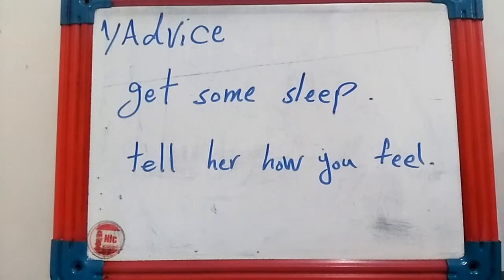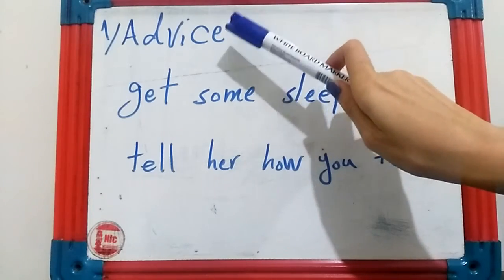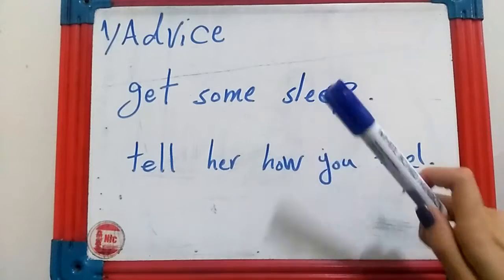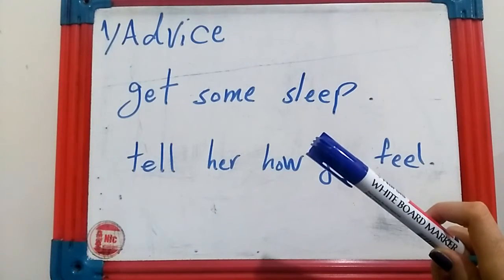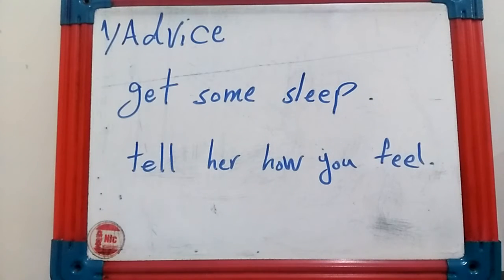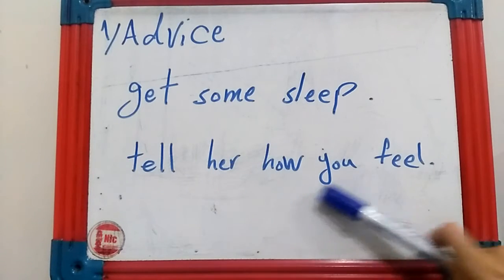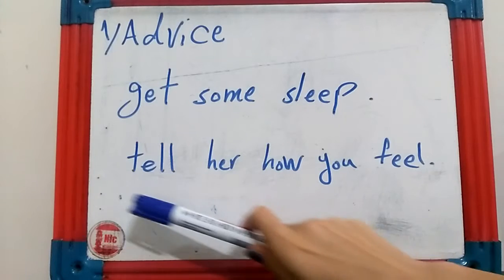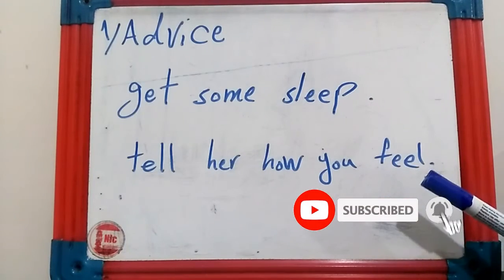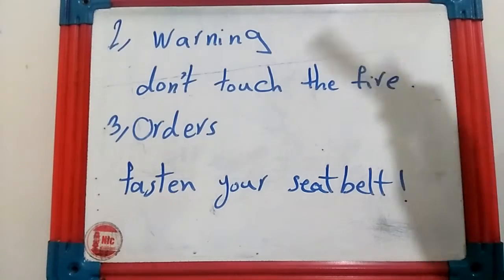Where do we use imperative sentences? The first use is advice. For example: 'Get some sleep' — no subject, and the structure is the infinitive form without 'to.' This is a positive imperative. Another example: 'Tell her how you feel.' So the first use is advice.